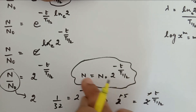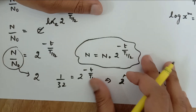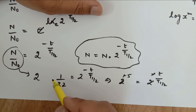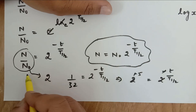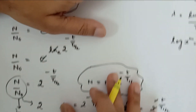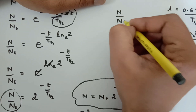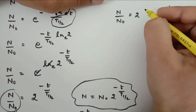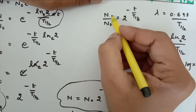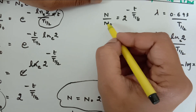In the majority of numericals, you need to check whether this ratio n upon n₀ appears as 2 to the power something. This expression is going to help you a lot in those cases. There are few textbook numericals which can be solved by this very easily. If the ratio n upon n₀ comes in the power of 2, then it is straightforward.